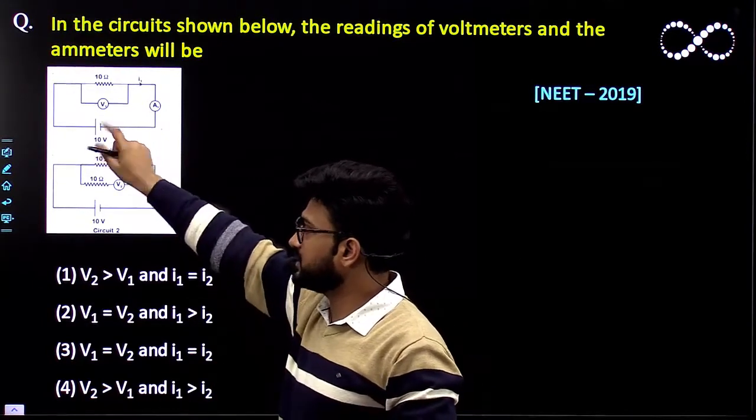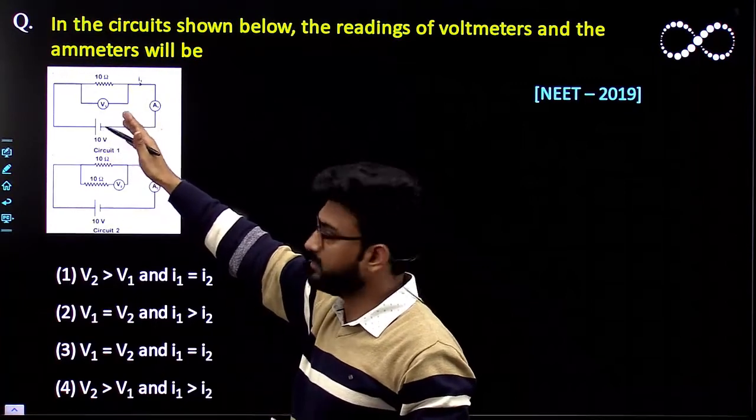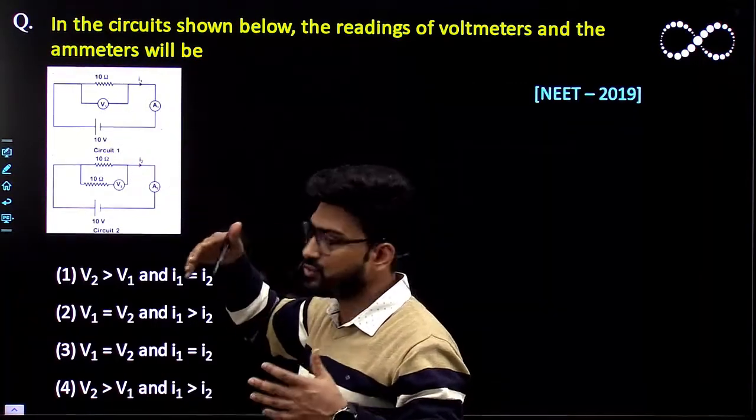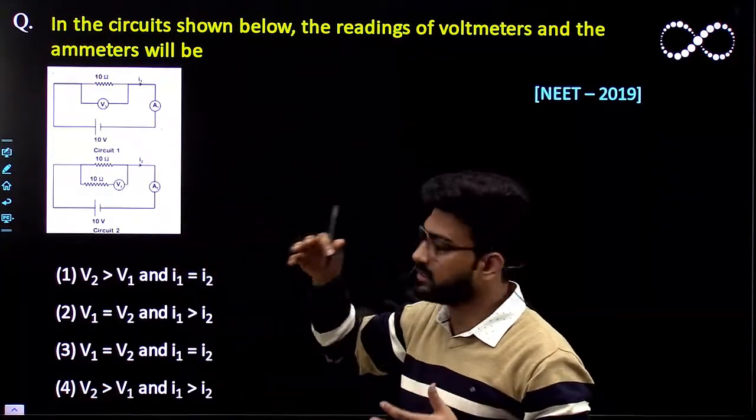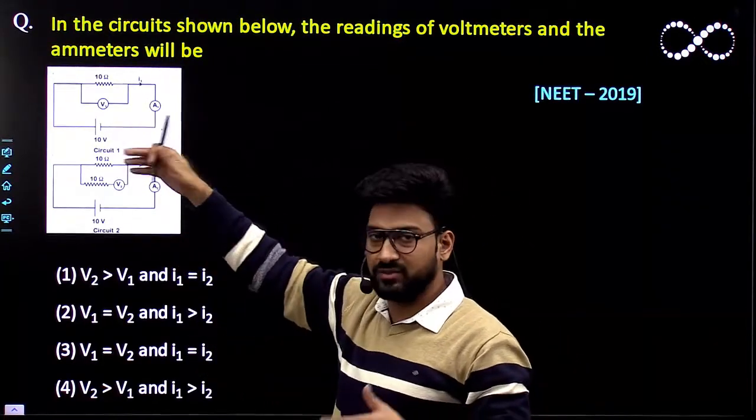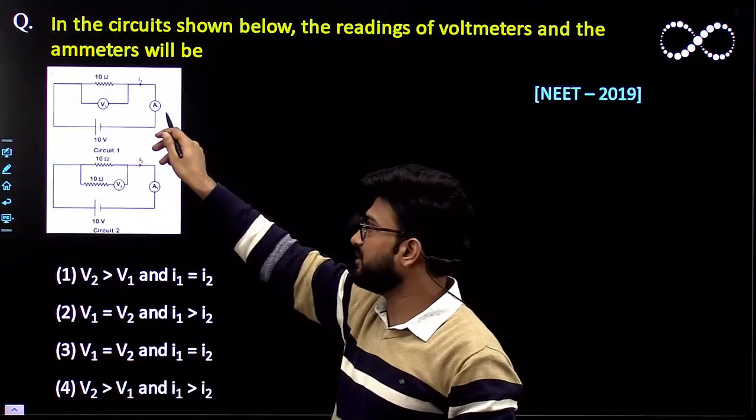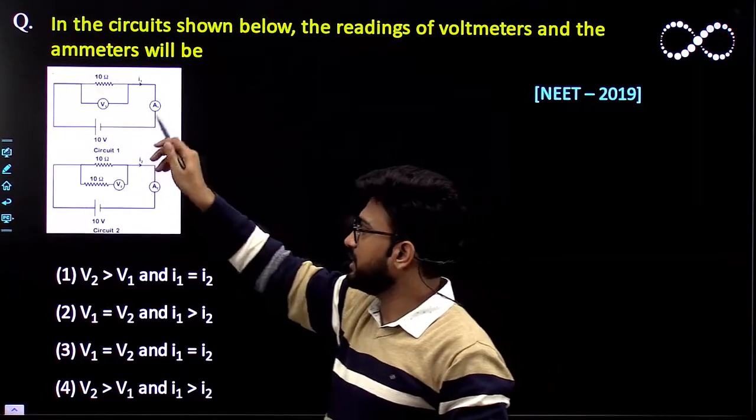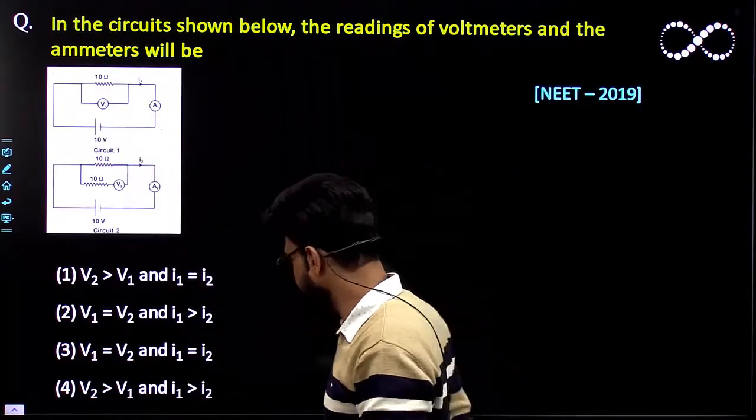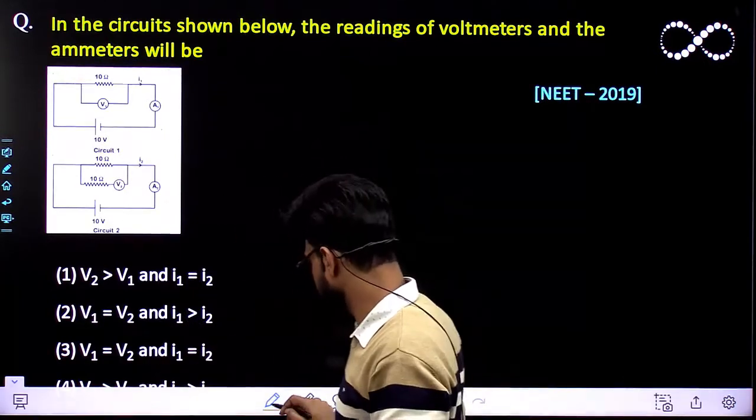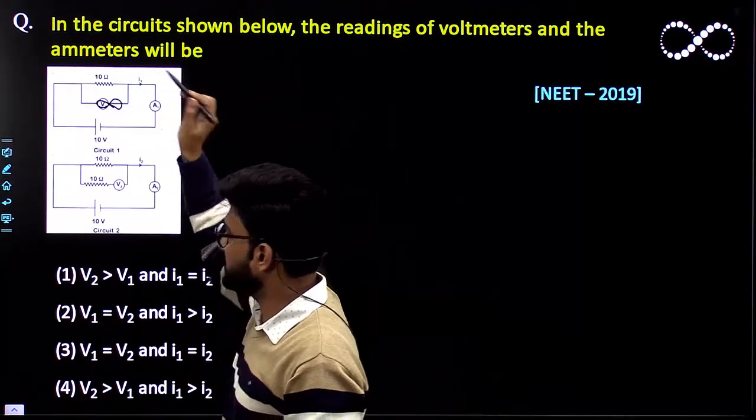Since in circuit 1 it is an ideal, whenever you have been given a voltmeter and ammeter you have to make sure it is an ideal one. This is a generalized term that you need to learn. So that means we have to take voltmeter and ammeter as ideal. Ideal ammeter has zero resistance and ideal voltmeter has infinite resistance. So this circuit would have infinite resistance.